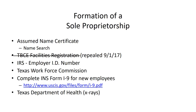Once the sole proprietorship decides or needs to hire employees, they need to apply to the IRS for an Employer Identification Number, so they have a taxpayer ID number other than their personal Social Security number. If you want to protect the privacy of your personal Social Security number, it may be a good idea to apply for an EIN even before you plan to have employees, so the sole proprietorship has a tax ID number separate from the individual's Social Security number.